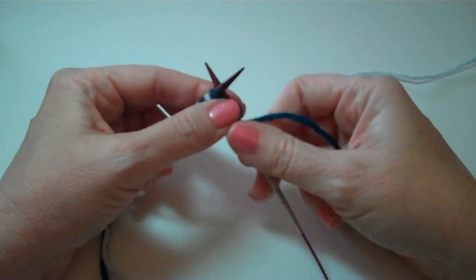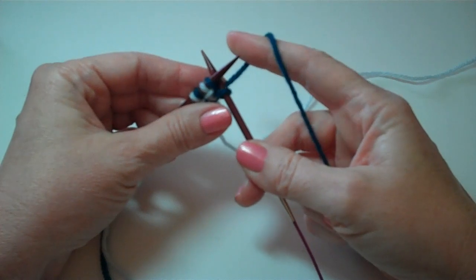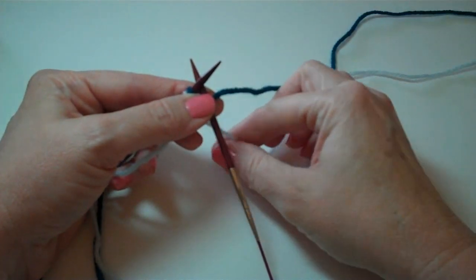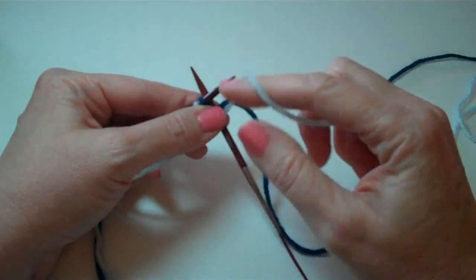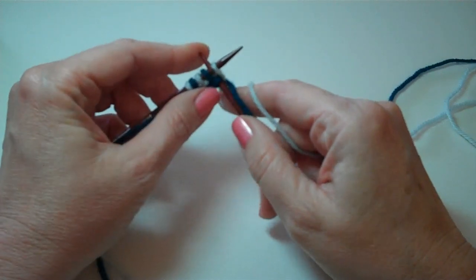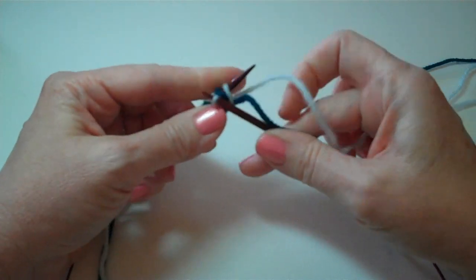Retract the needle, stick it back in the front door and I find it's best to tighten this up just a little bit before I grab my next color. Always grab the new color from underneath the old color. I'm going to bring that over the top of the left, around the right and we're going to bring it all the way down and through.